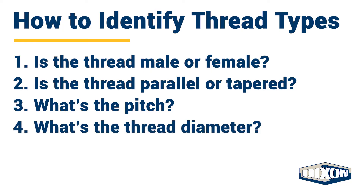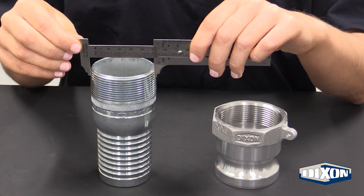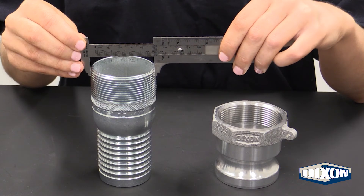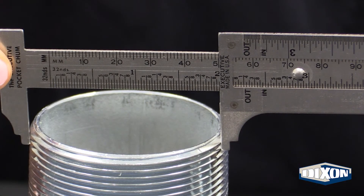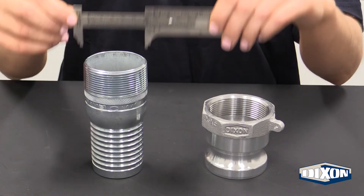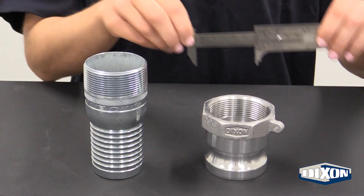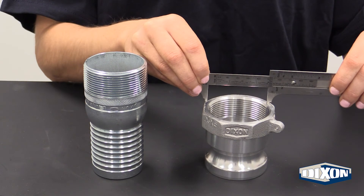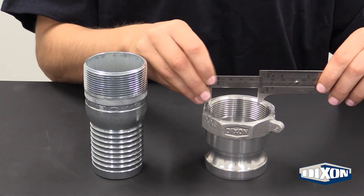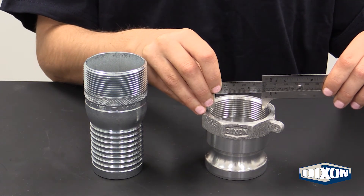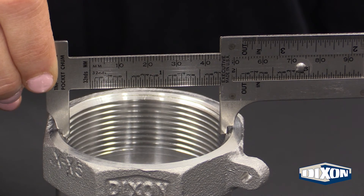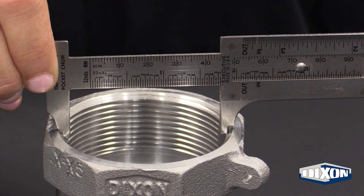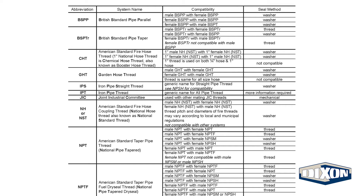Step 4: What's the thread diameter? Use a caliper or OD tape to measure the outside diameter of a male thread and the inside diameter of a female thread. You may see small variances between your measurements and the size charts due to different thread manufacturers.